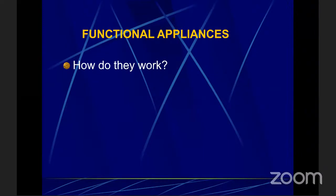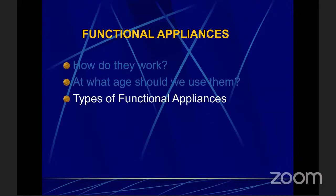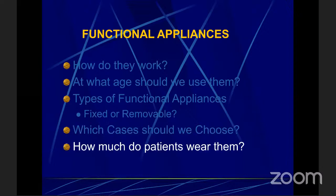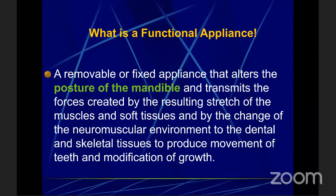When we talk about functional appliances, we will discuss how they work, at what age we should use them, the different types — fixed or removable — and which cases we should choose. We should also discuss how much patients wear them and their compliance level. A functional appliance is a removable or fixed appliance that alters the posture of the mandible and transmits the forces created by the resulting stretch of the muscles and soft tissues, and by the change of the neuromuscular environment to the dental and skeletal tissues to produce movement of the teeth and modification of growth.